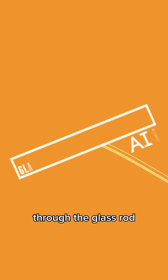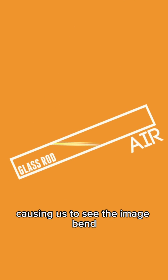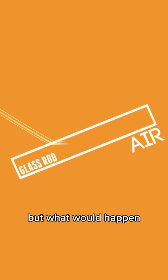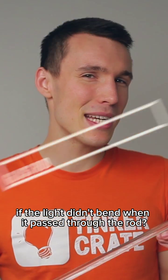This is because as light travels from the air through the glass rod, it actually bends, causing us to see the image bend. But what would happen if the light didn't bend when it passed through the rod? Let's check it out.